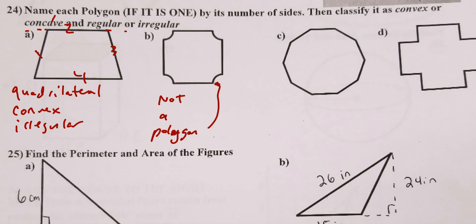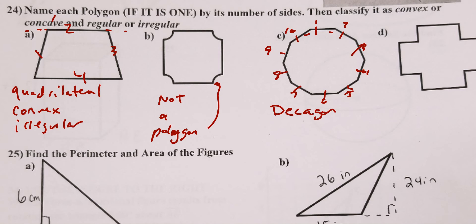C has 1, 2, 3, 4, 5, 6, 7, 8, 9, 10 sides — C is a decagon. It is convex. Although I forgot the markings, I meant to make it regular. Technically if you put regular you would have gotten credit, but it's not technically regular because it doesn't have the markings to show all sides are congruent.